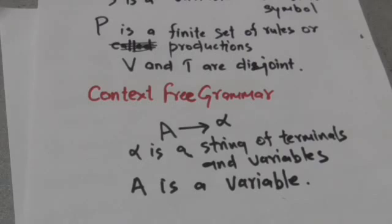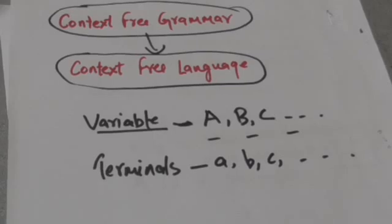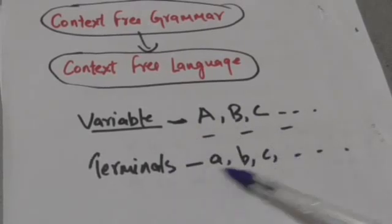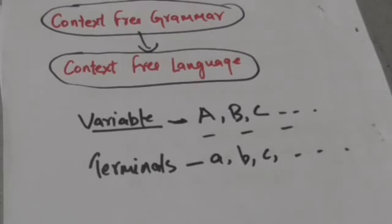The language generated by a context-free grammar is called a context-free language. It is the set of strings of terminals which can be produced from the start symbol S by using productions. Variables are denoted by capital letters and terminals are denoted by small letters. How we can generate strings of terminals by using the productions of a context-free grammar from the start symbol — this we will study in the next tutorials. Thank you very much.